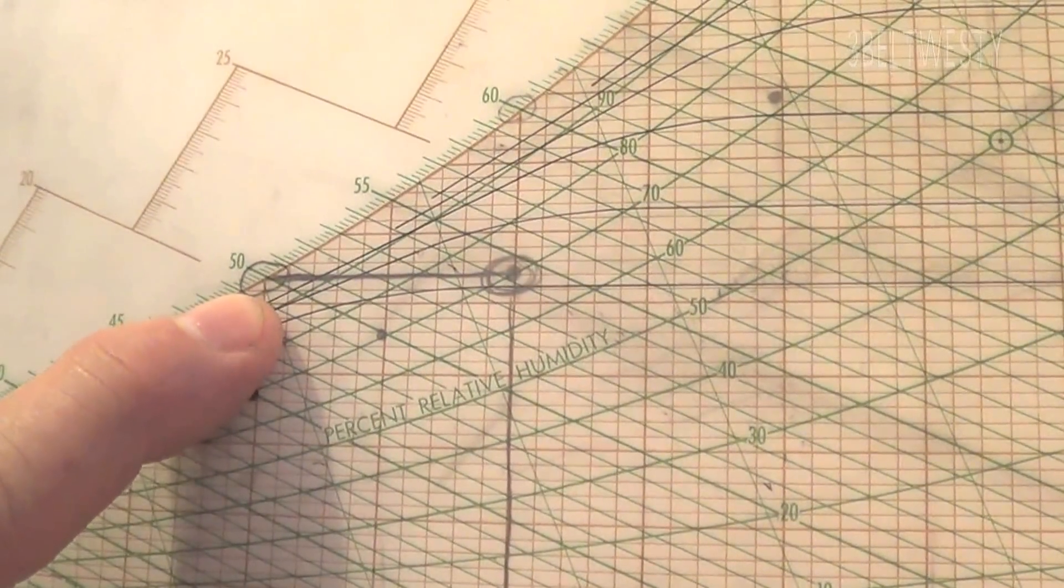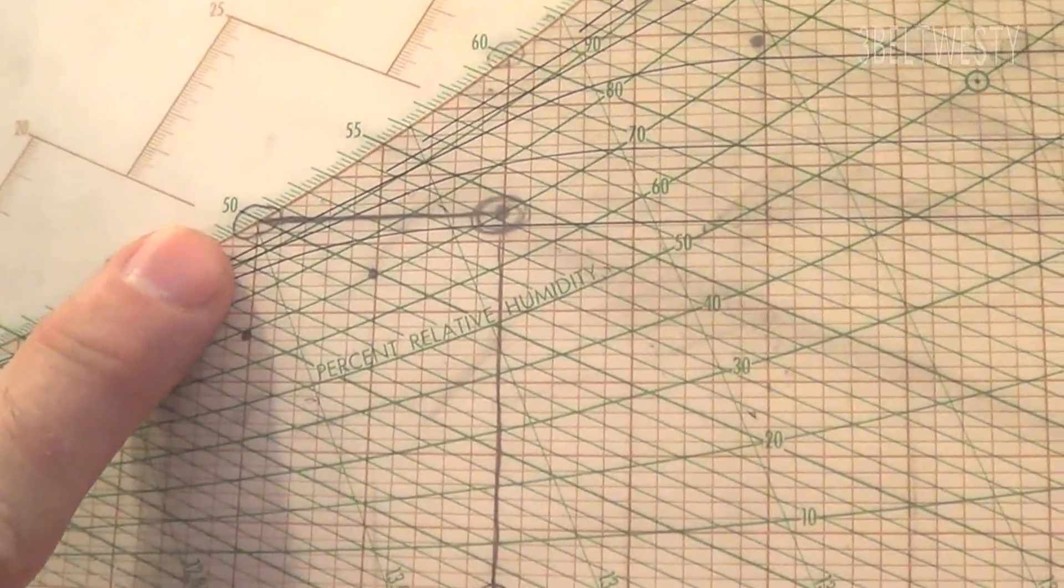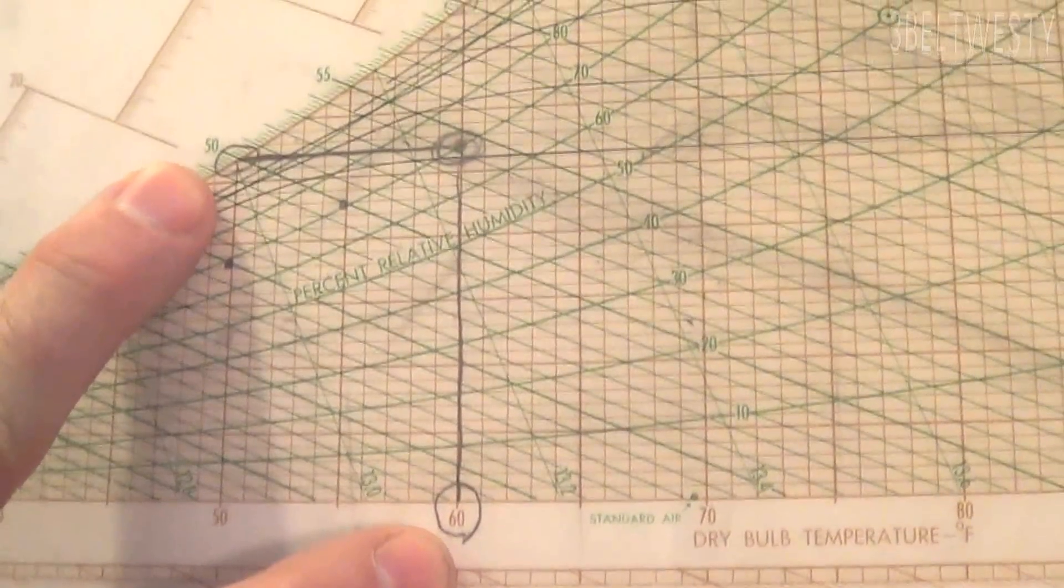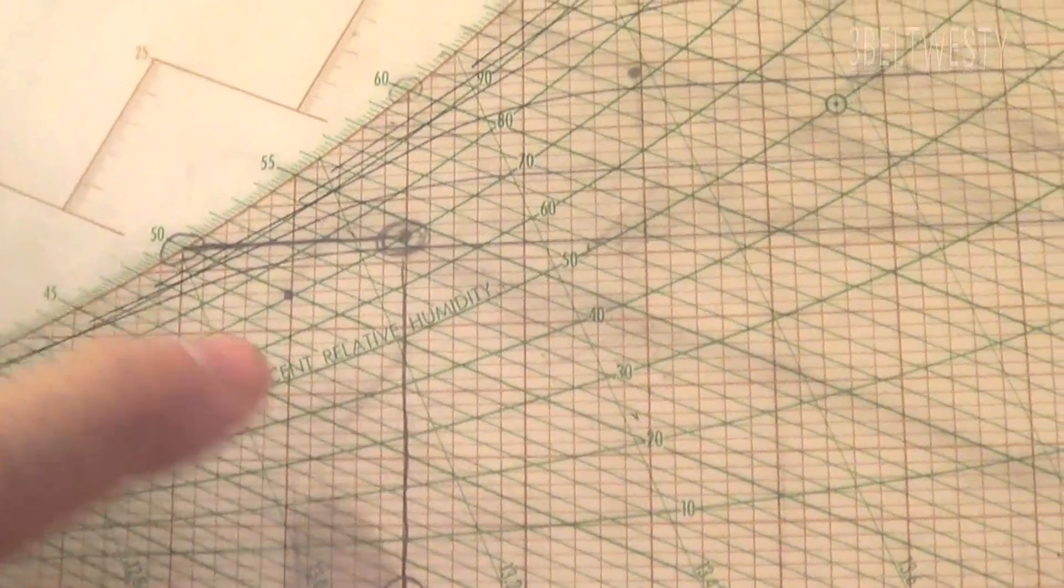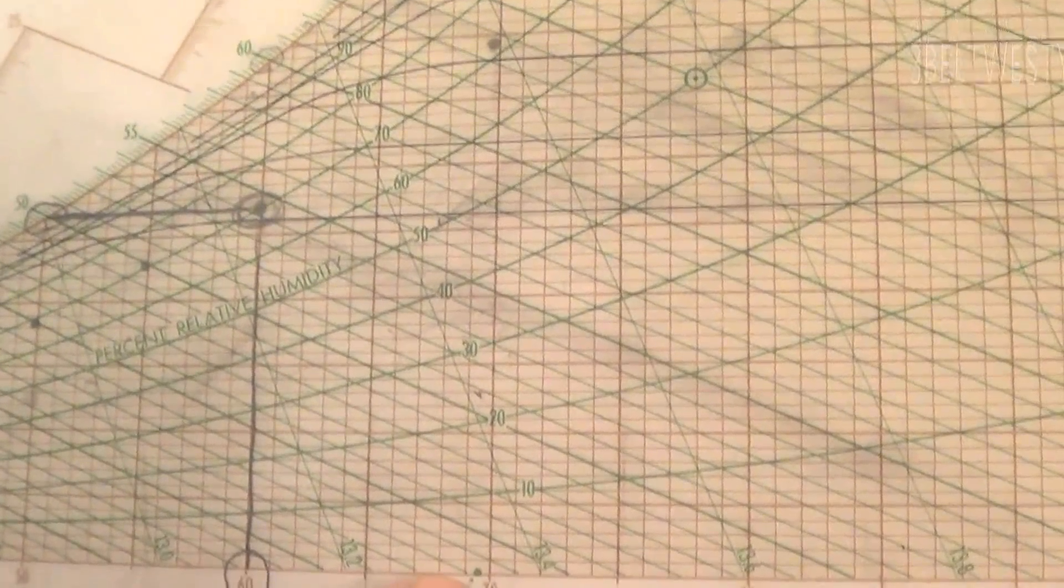...the dew point is 50°F, which is a delta of 10 degrees here. And if I go take here, it's 70 degrees F...